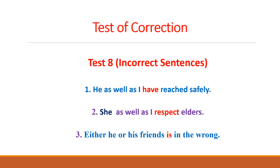The first sentence is: 'He as well as I have reached safely.' You can see that the pronouns and subjects are connected with 'as well as,' and 'have' has been highlighted, indicating that there is something wrong with using the helping verb 'have.' Sentence number 2: 'She as well as I respect elders.' Again, 'respect' is highlighted, showing that there is something wrong with the use of 'respect.'